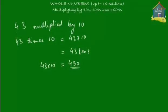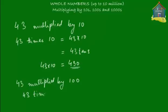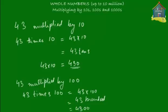Now let me try to multiply this number by 100 and see what we get. So we're trying to do 43 multiplied by 100. When you say 43 multiplied by 100, you're trying to do 43 times 100. And that simply means 4300. So 43 times 100 gave you 4300.